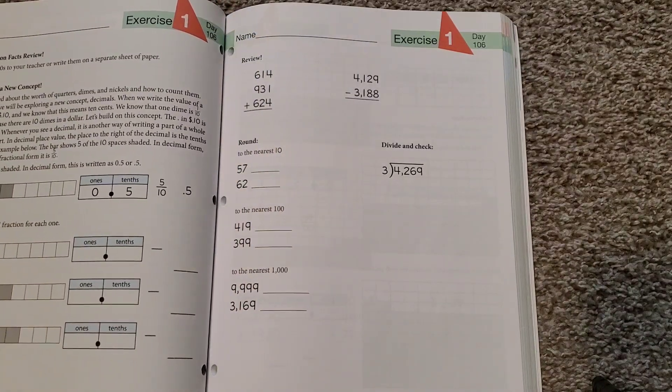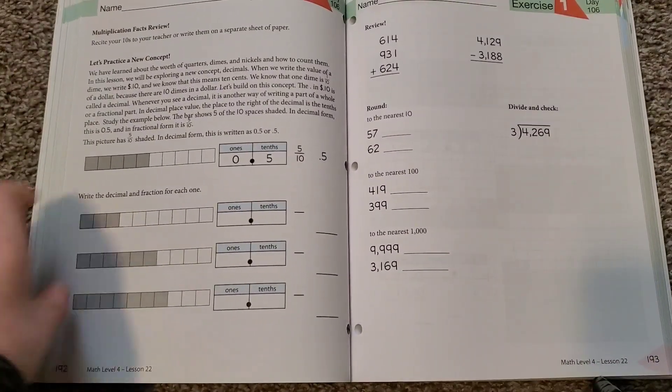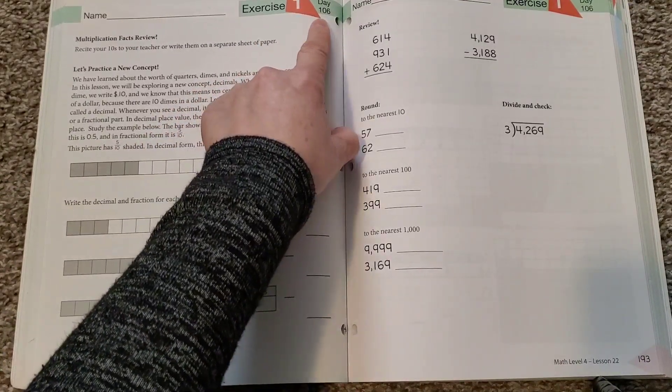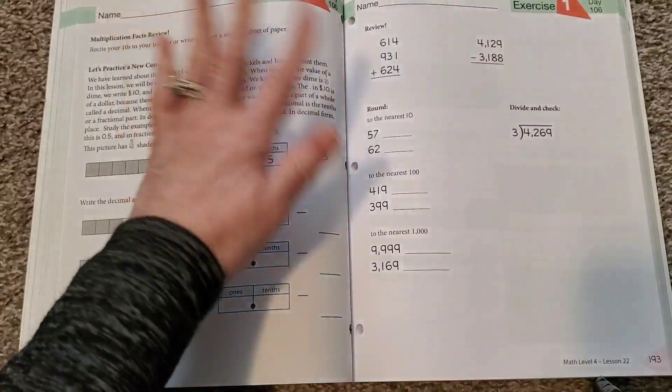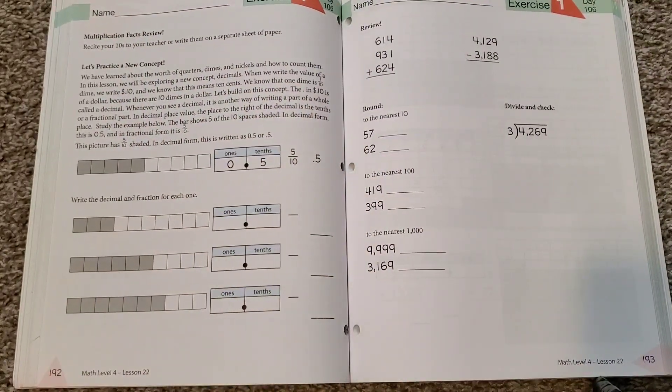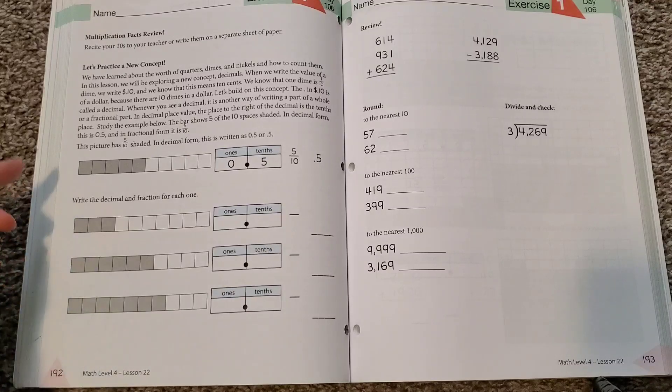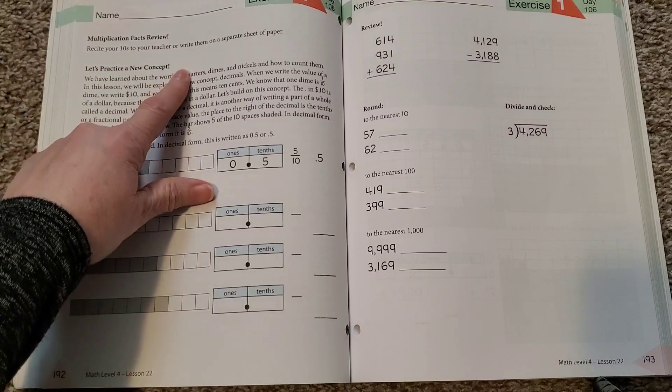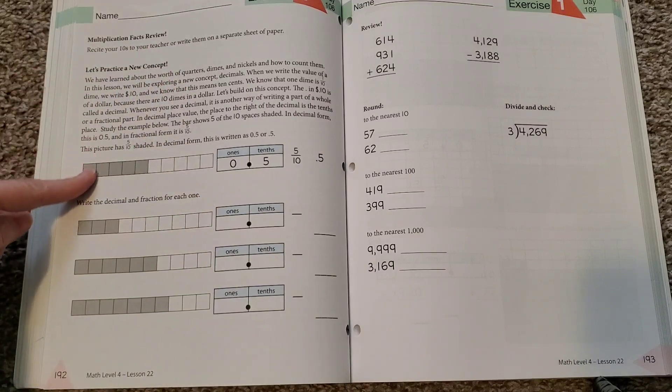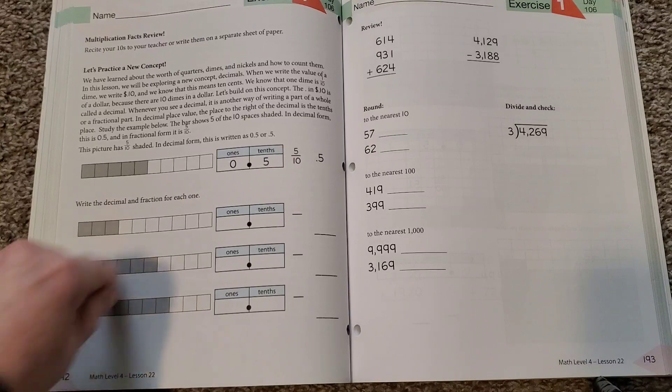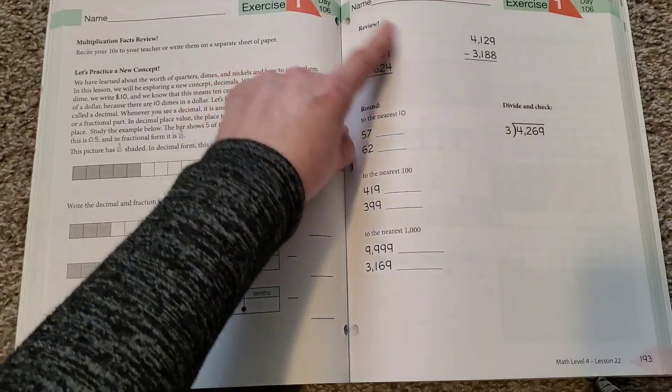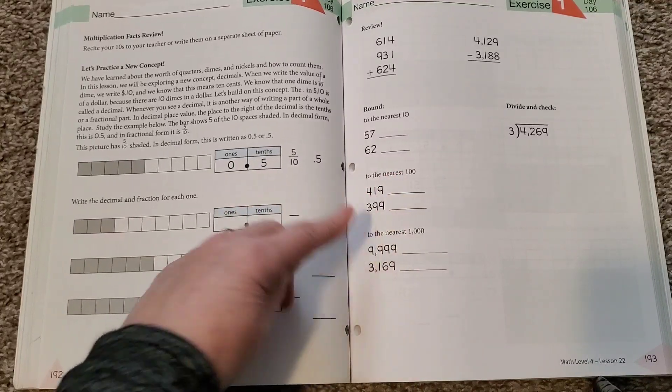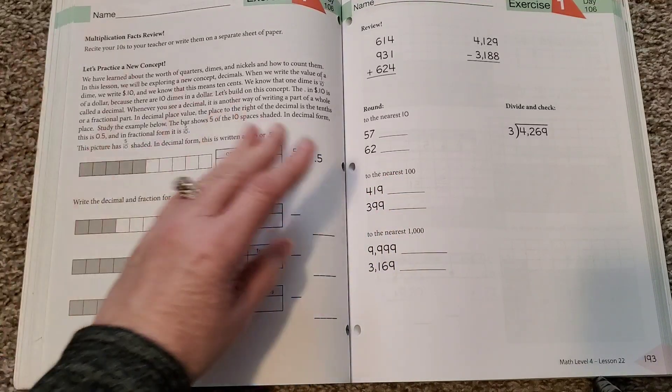And so it'll go on after that. And you'll have your first exercise. Exercise one. It'll even tell you what day it is, like day 106. Which, like I said, I don't follow that. I just do things at our own pace. And they'll do, on this particular lesson, they're doing a multiplication facts review. And then they'll go into your new concept. And then, again, this is day 106. So technically you can do both of these pages in one day. Sometimes I do. Sometimes we don't. It just depends on how the day is going.